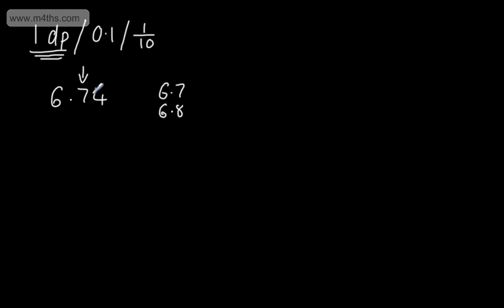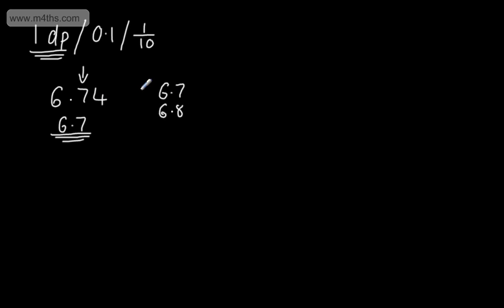So we can see this one here is going to be 6.7, correct to one decimal place. When we talk about rounding down, it's important that you don't round down to 6.6 — it just means we go down to 6.7.